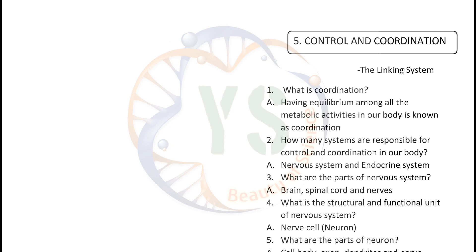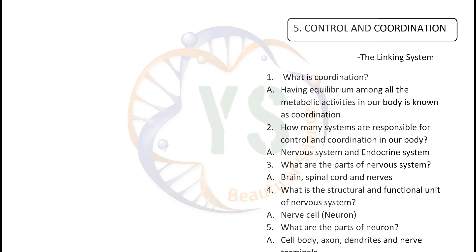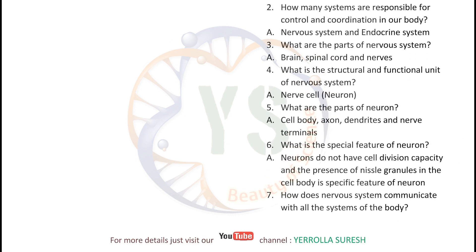What are the parts of the nervous system? Brain, spinal cord and nerves are the parts of the nervous system. What is the structural and functional unit of the nervous system? Nervous cell, also known as neuron. What are the parts of a neuron? Cell body, axon, dendrites and nerve terminals are the parts of a neuron.